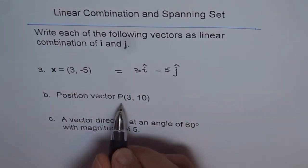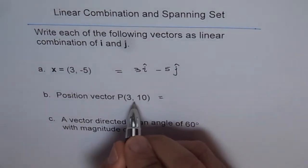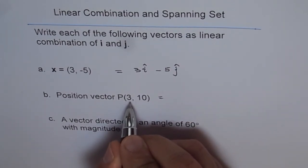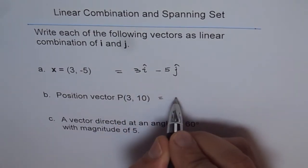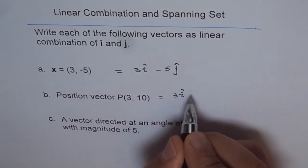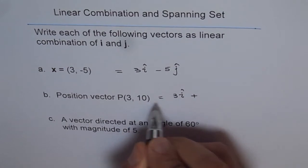Position vector P can be written as 3 is the x component and 10 is the y component. So 3 is along x-axis, that means i. So it is 3i plus 10j.